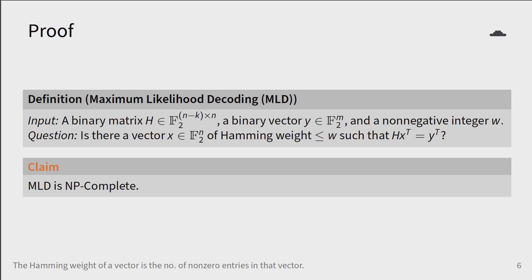The question is whether there exists a binary vector of size n with Hamming weight, which is the number of non-zero entries in a vector less than or equal to w such that when we multiply X by H, we get Y back. All problems in complexity theory are written in this yes or no form. Our claim here is that deciding this problem is NP-complete.